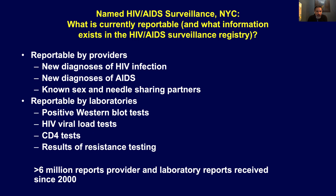With named HIV surveillance in New York City, this is what's currently reportable: any new diagnosis of HIV infection, regardless of whether the person has progressed to AIDS; any new diagnosis of AIDS, even if the person was previously reported as a new case of HIV without AIDS; any information on known sex and needle sharing partners so that contact and partner notification could take place. Laboratories report on positive serological tests, viral load tests, CD4 tests, and more recently, the results of resistance testing — a common practice of providers treating HIV patients. When there's evidence that patients are not responding to drugs, genotyping tests can be done to look for drug-resistant HIV, and those tests are reportable as well.